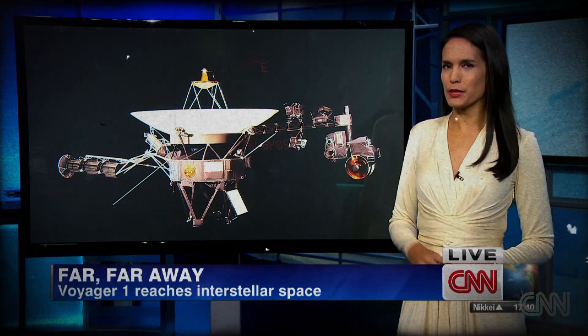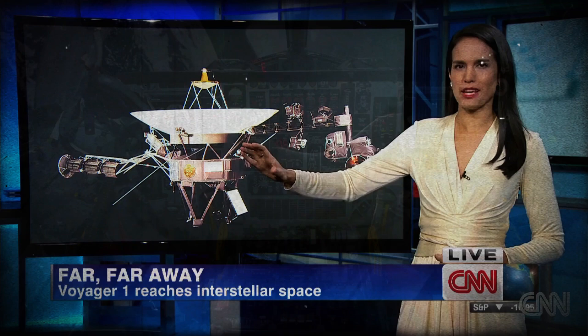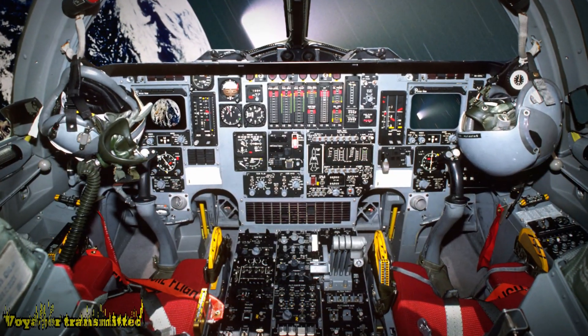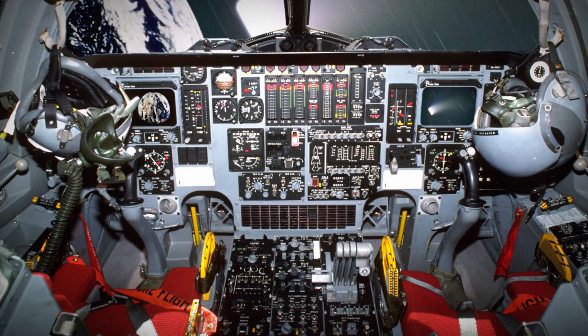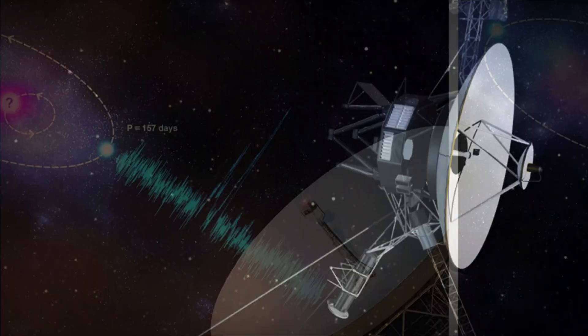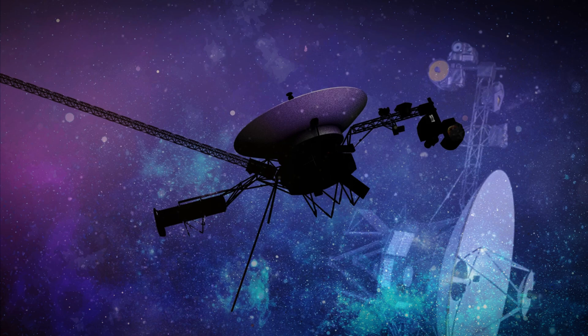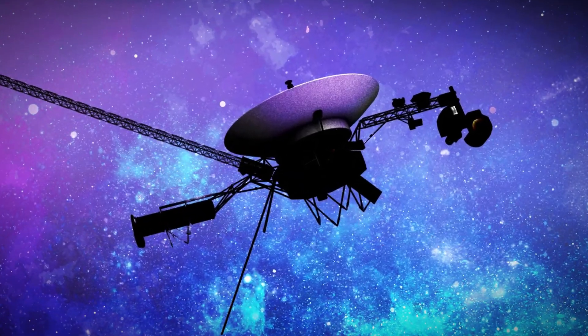NASA says that Voyager 1 has become the first man-made object to reach interstellar space. Just eight minutes ago, Voyager transmitted a chilling message from deep space, one that left scientists stunned. Something was amiss, something they never saw coming. Now, the world watches in suspense.